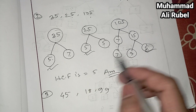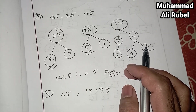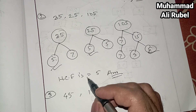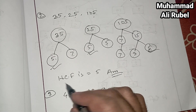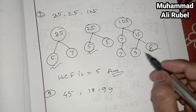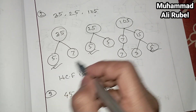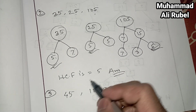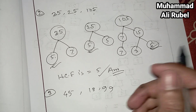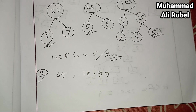There is no other common number. So we find only the common number 5. The HCF is 5. Now look at number 3.